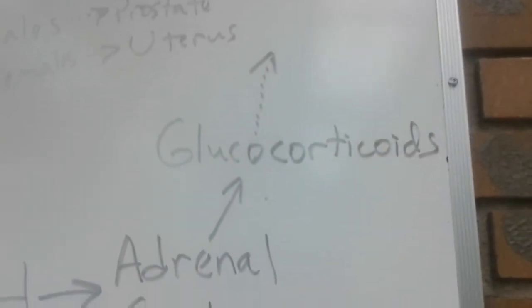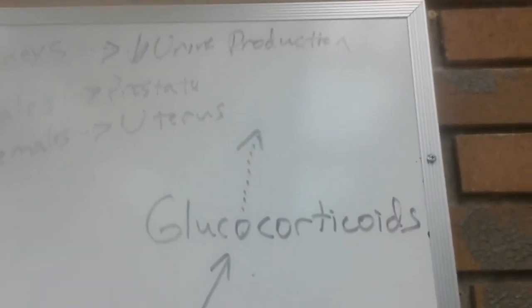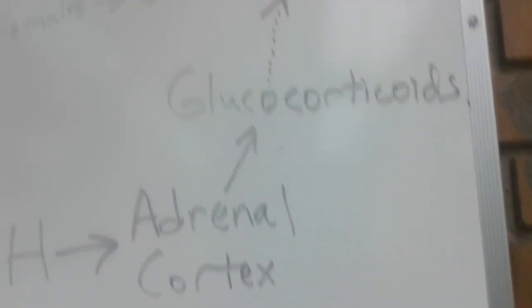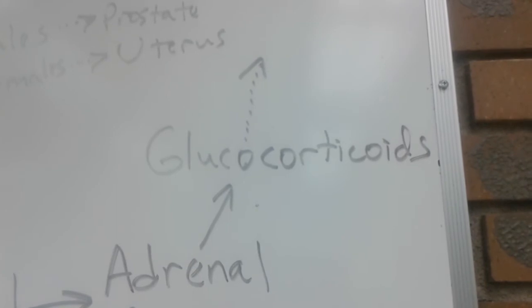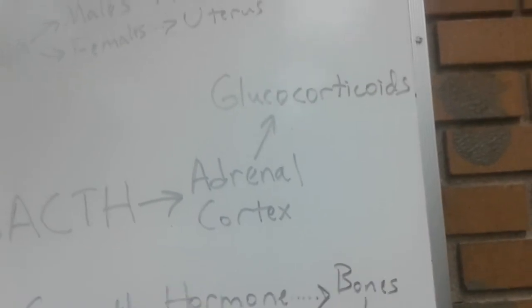Tropin is the same thing as saying it gets it tripping. So ACTH starts your adrenal cortex to be tripping and it releases glucocorticoids. Those glucocorticoids I have an arrow there and I have no clue why, we're going to erase that because we don't need that there.